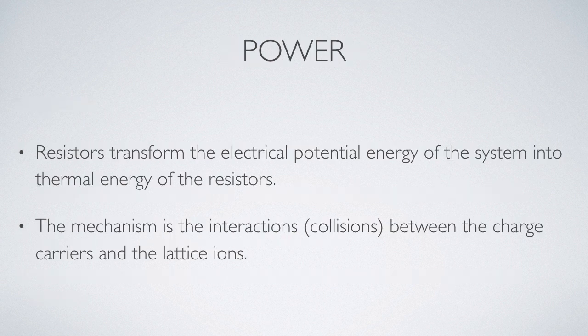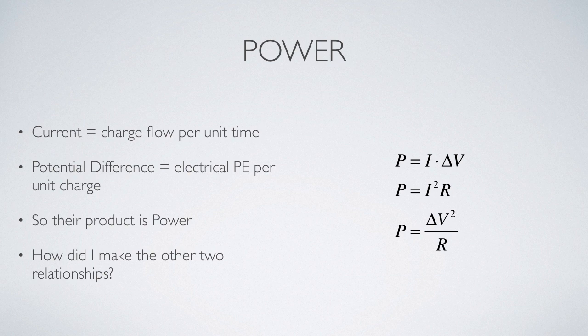As we talked about before, resistors transform electrical potential energy of the system into thermal energy by inelastic collisions with the lattice ions. So how do we calculate the rate at which this energy is converted or transformed?